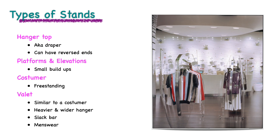Coordinates and complete outfits are shown using costumers, valets, and drapers. The costumer is freestanding with a hanger and skirt bar. It can be placed on a floor, ledge, or counter. The valet has a heavier and wider hanger than the costumer and has a slacks bar. It is useful in menswear.